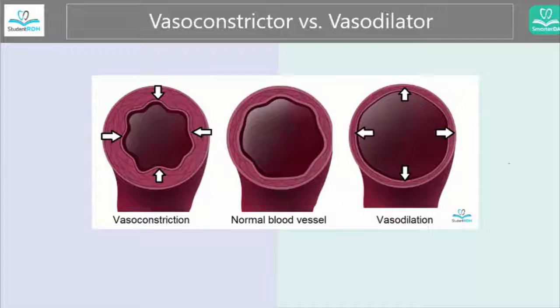Let's look at the word. Constrictor means that it's going to narrow it, versus dilator means it's going to widen it.